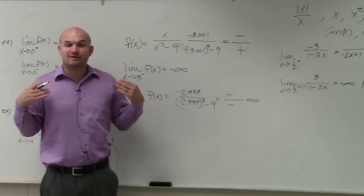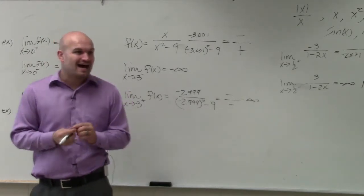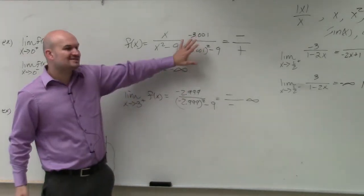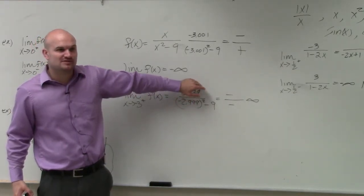So therefore, without even knowing what the graph looks like, without having to graph it or use a table, I can just pick values and use their signs to help me determine what the left and right hand behavior is going to be of those limits.